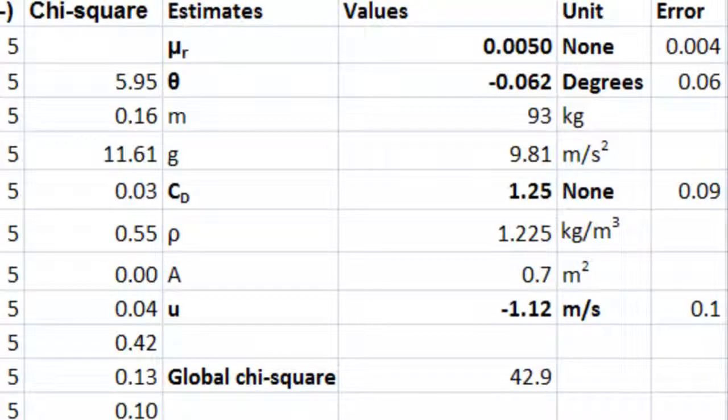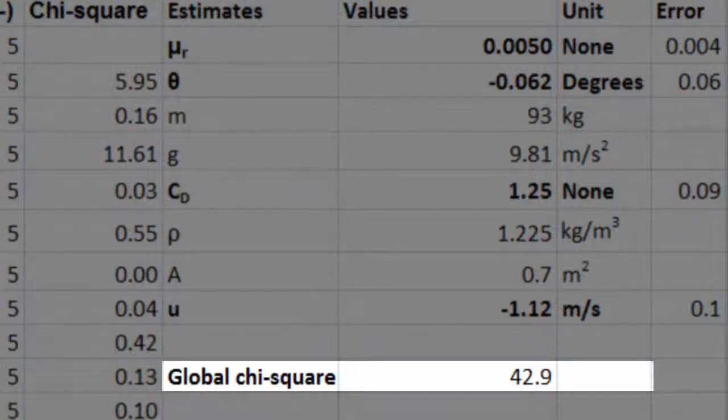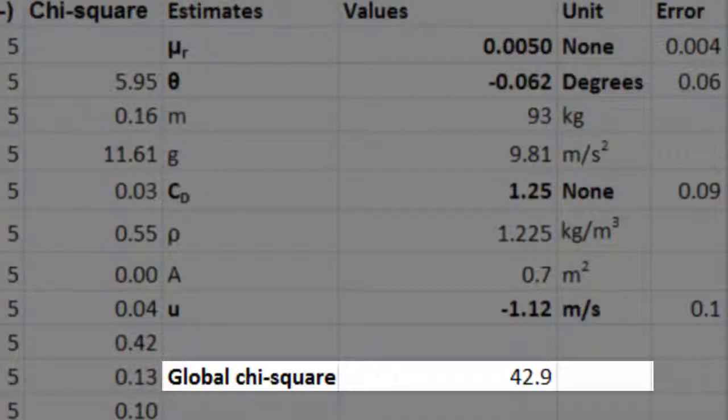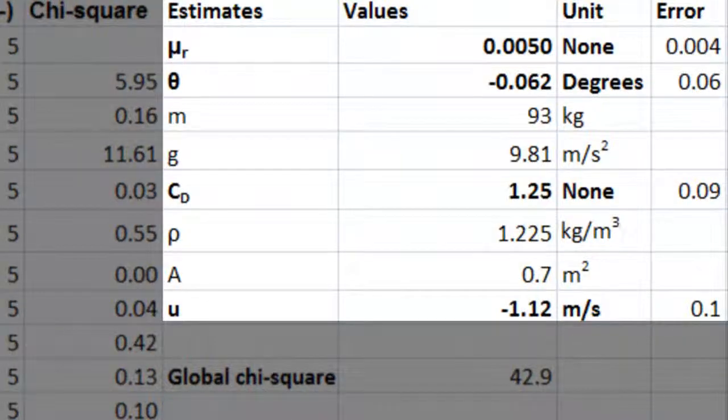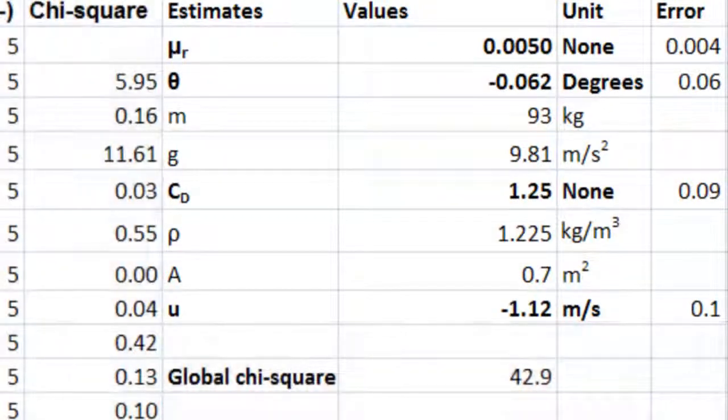There is an easy way to do this with Excel. Once you have added all the chi-squares, which you want to minimize, you can open the solver add-in in Excel and minimize this sum by changing the values of mu r, theta, CD, and u. The solver will then give you approximate values that you can confirm.